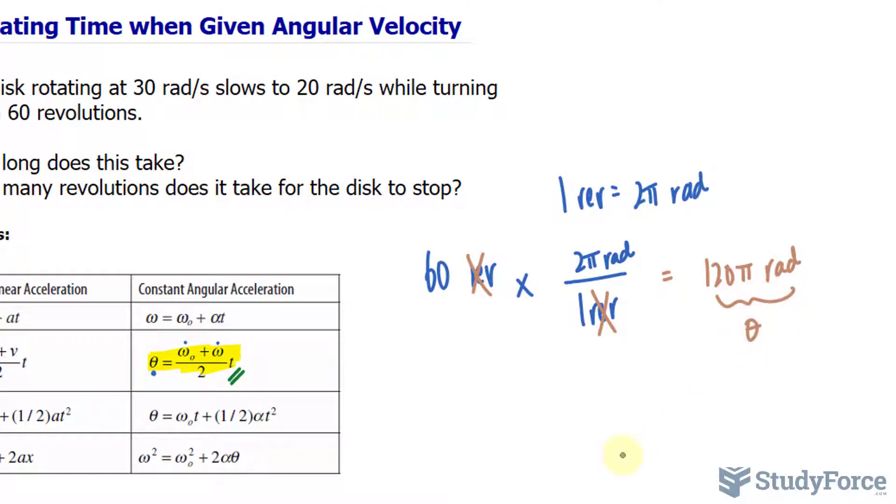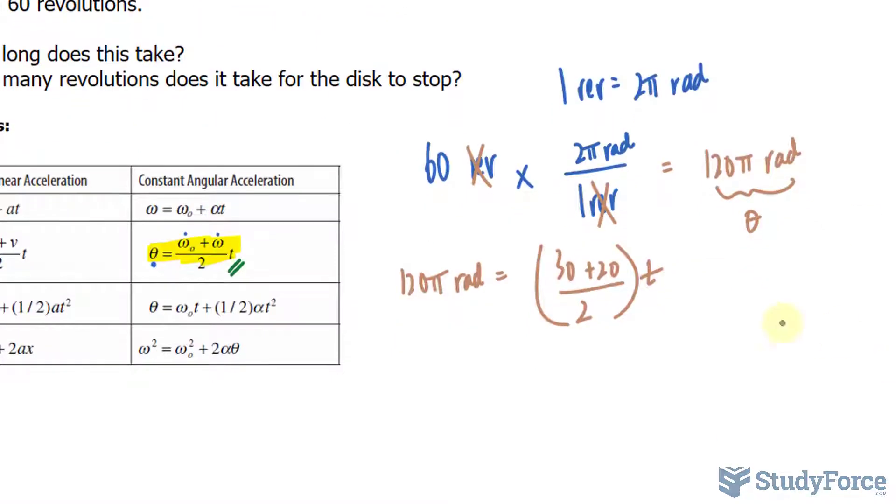This will go in place of theta. So I have 120 pi radians is equal to the top part represents 30 plus 20. And we're dividing that by 2, so 50 divided by 2 times the time. 50 divided by 2 makes 25 T and 120 pi radians.